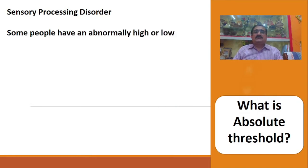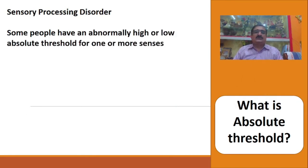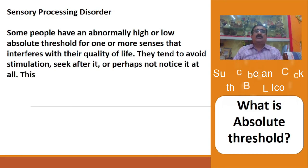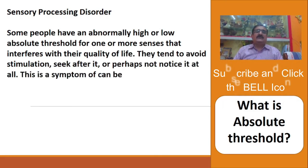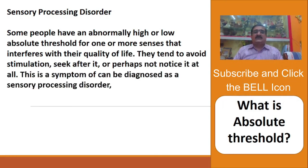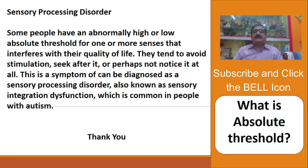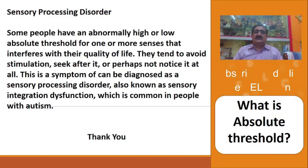Sensory processing disorder comes in relation with absolute threshold. Some people have abnormally high or low absolute threshold for one or more senses that interferes with their quality of life — they tend to avoid stimulation, seek after it, or perhaps not notice it at all. This is a symptom that can be diagnosed as sensory processing disorder (SPD), also known as sensory integration dysfunction, which is common in people with autism.